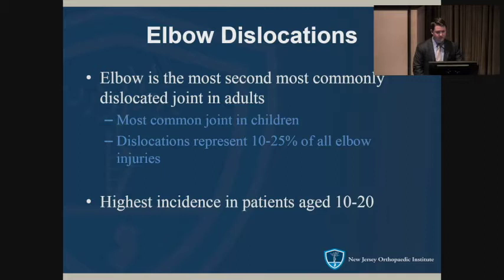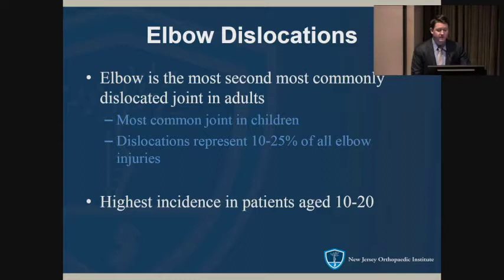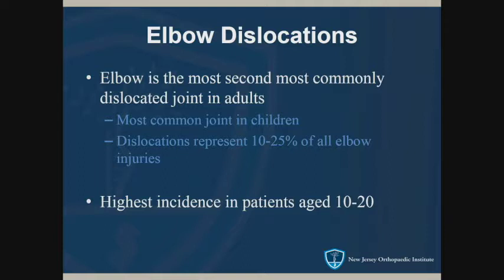In terms of dislocations, the elbow is the second most commonly dislocated joint in adults. The most common would be the shoulder, and in children it actually is the most common. These represent 10 to 25 percent of all elbow injuries, so they are fairly common. The highest incidence we see is in patients aged 10 to 20.